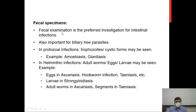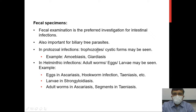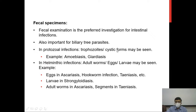Faecal specimens are one of the more common specimens received for parasitological investigations. They are the preferred investigation for intestinal infections and are also useful for parasites living in the biliary tract, since these parasites pass eggs that are ultimately released into the intestine. In protozoal infections, trophozoites or cystic forms may be found; these are the two main stages seen in protozoal infections.